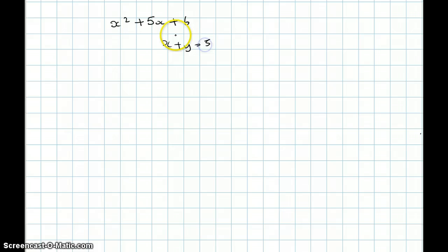So basically x plus y equals 5, if we make it a simultaneous equation x times y equals 6, just to better represent what you need to do. So the factors of 6 are 6 and 1, 2 and 3.